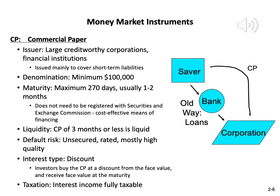The denomination of commercial paper is a minimum of $100,000. The maturity is a maximum of 270 days, most of the time 1 to 2 months, because commercial papers are issued to cover short-term liabilities. The 270-day limit is a magic number: within 270 days, companies do not need to register with the SEC, the Securities and Exchange Commission, which is a very cost-effective means of financing — it saves a lot of paperwork.